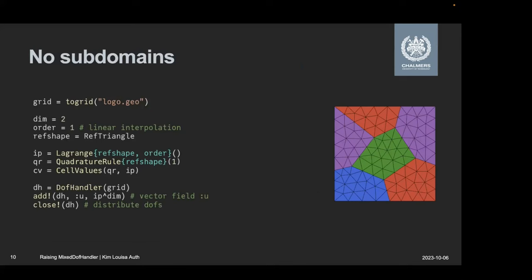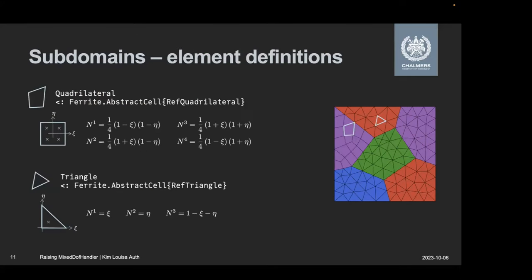But to start that, let's go back to the regular triangular grid. For those of you who are not terribly familiar with ferrite, what I do here is I'm loading the grid and I'm defining a few helpers. So I want a linear interpolation on my triangles. I define an interpolation and a quadrature rule which then together constructs the cell values object. That's what I would really look at as the element definition. It says which polynomials am I going to use, which quadrature rule. And then I construct a DofHandler. I just add a displacement field to it here and distribute the Dof. So that's the basic structure and now we're going to vary that a little bit.